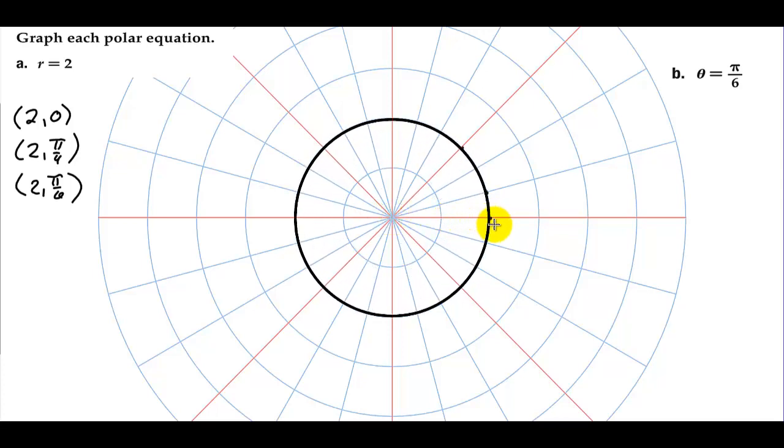Now with the equation θ=π/6, all you need is to have the angle be π/6, and it can be any radius. So that's going to be a line. It's a line along π/6, and it extends in both directions forever. So there's the equation θ=π/6.